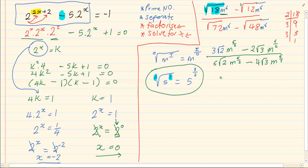Now, let's continue. Once we have done this, we have 3√2 m³ minus 2√3 m³ all over 6√2 m³ minus 4√3 m³.